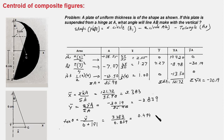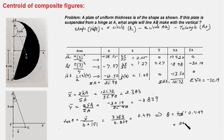Therefore θ = tan⁻¹(0.494), which equals approximately 26.3°. That is the answer.